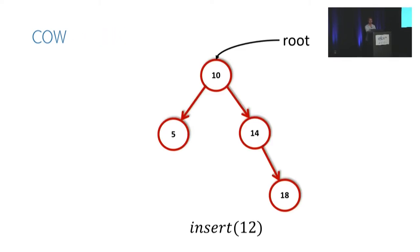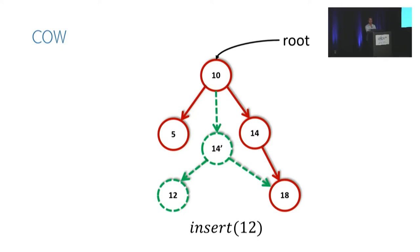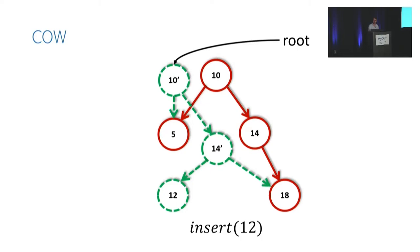Let's say we would like to insert key 12 into a tree that uses copy-on-write. The algorithm traverses the tree and finds the node at which to insert the new key. According to the copy-on-write protocol, the tree algorithm should first copy the node, update the copy, and then replace the original node with its copy. However, to do so, we must also update the node with key 10, so according to copy-on-write, that node must be copied too, and its copy should be the one updated.